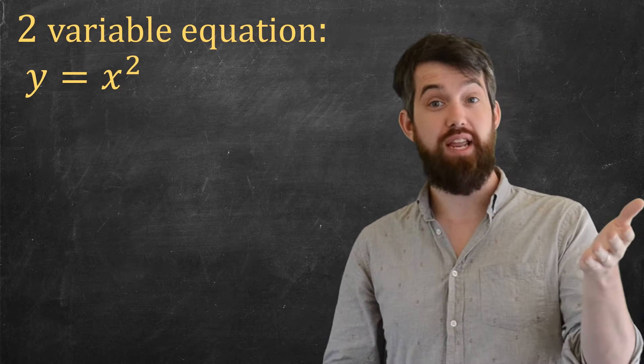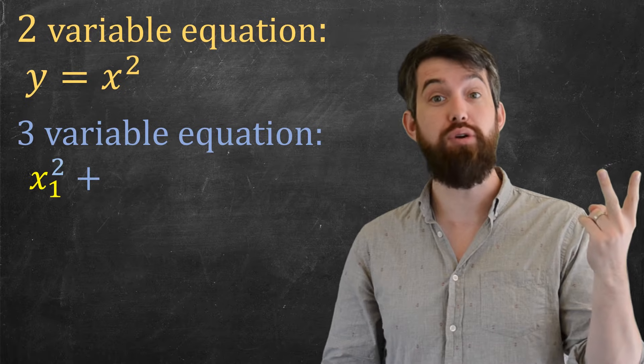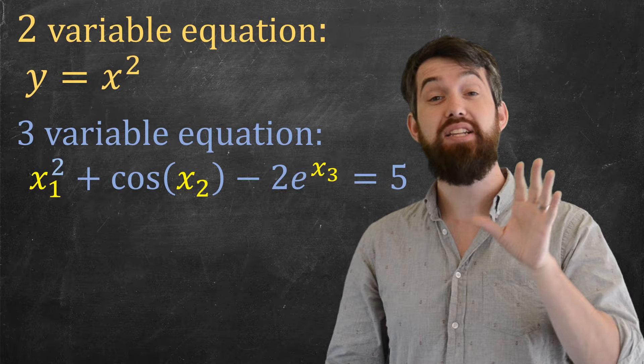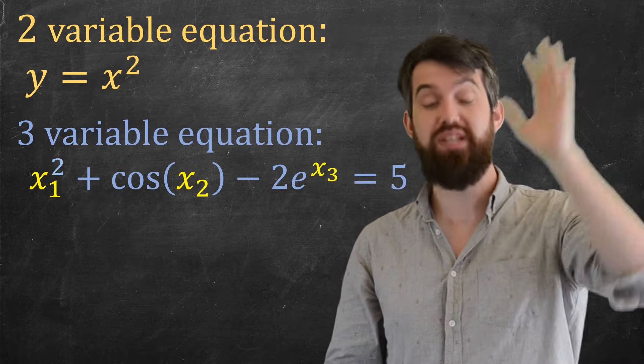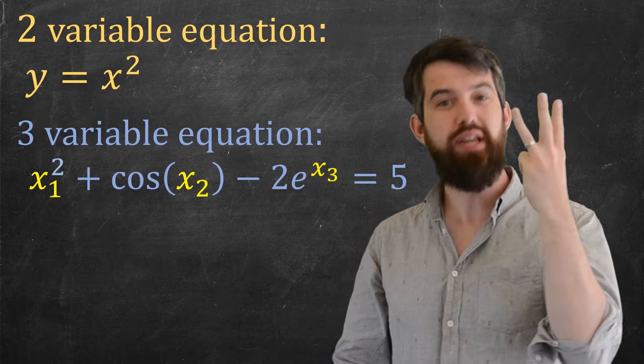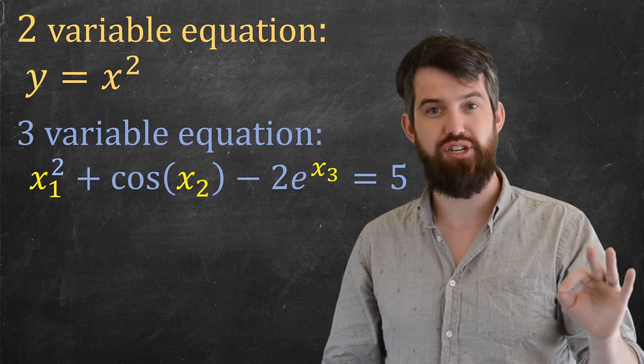And I can imagine an equation that had more variables than just the two here. For example, the equation x1 squared plus cos of x2 minus 2e to the power of x3 equals 5. That's just some messy equation in three different variables x1, x2, and x3.